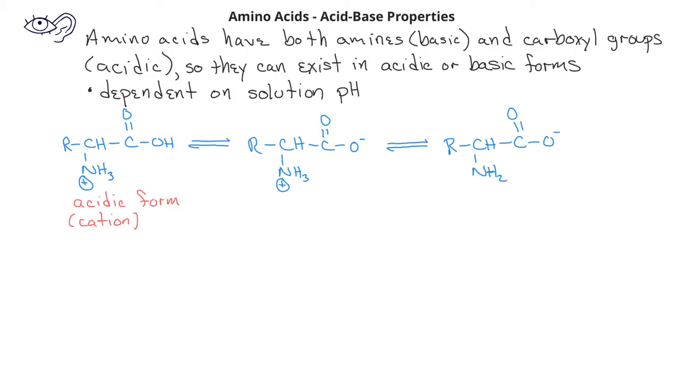This will be in equilibrium with a form of the amino acid that has a negative charge on the carboxylate because it has lost a proton, yet the amine group still has a positive charge. This is an interesting kind of structure because it's an ion that has both a positive and a negative charge.